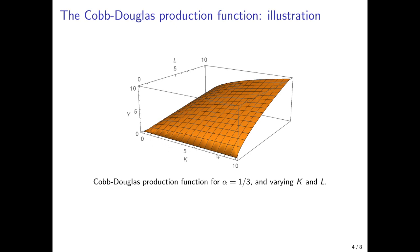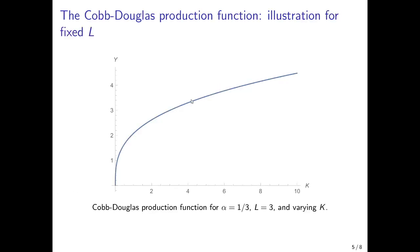If I don't employ any labor, I cannot produce. If I don't employ any capital, I cannot produce. And at the origin I also cannot produce anything. If we hold labor constant and increase only capital, we start at the origin with zero production, and the first unit of capital leads to a lot of additional production — so the slope of the production function at the origin tends to infinity. Then the slope decreases and as capital increases further, the slope decreases to zero.